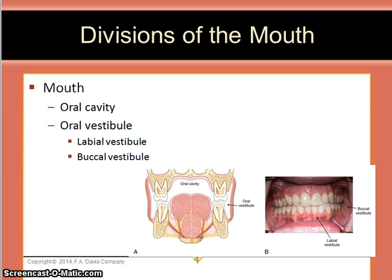The mouth is divided into the oral cavity and the oral vestibule. The oral vestibule is then subdivided into the labial and buccal vestibules.